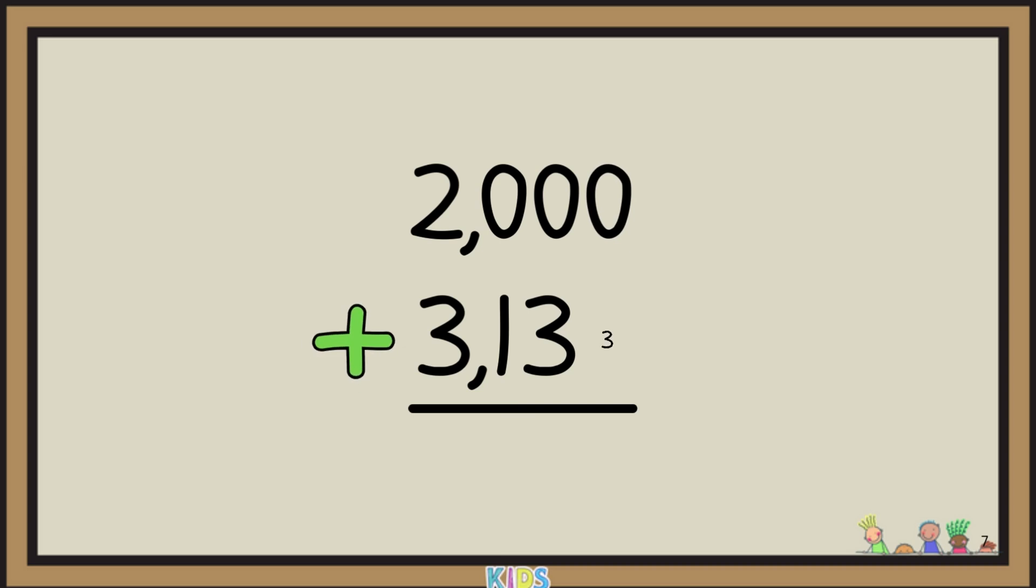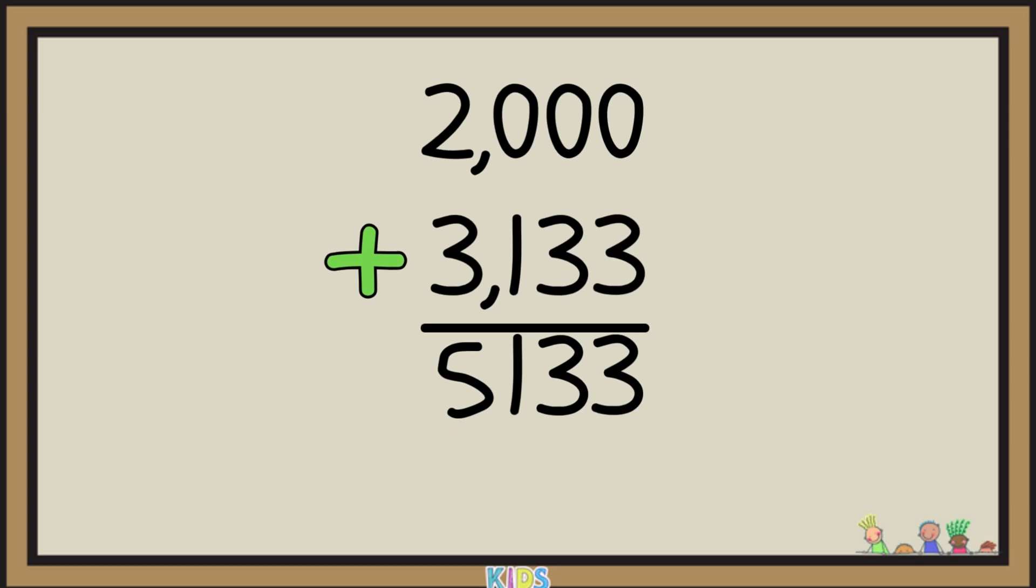0 plus 3 equals 3, 0 plus 3 equals 3, 0 plus 1 equals 1, 2 plus 3 equals 5. So the total number of apples is 5,133.